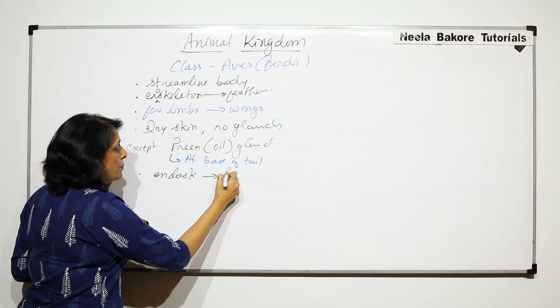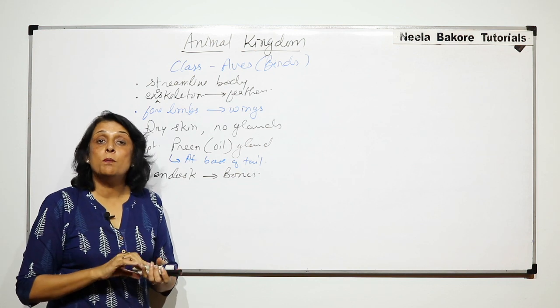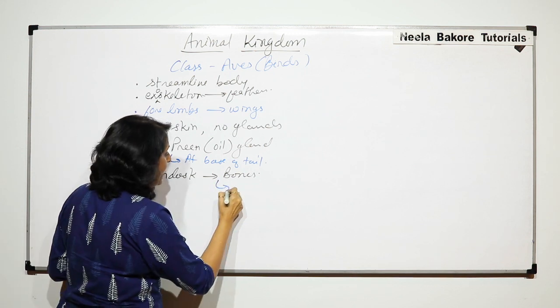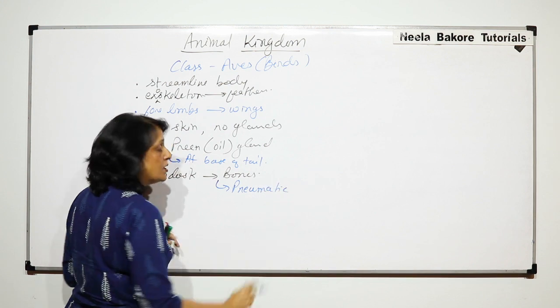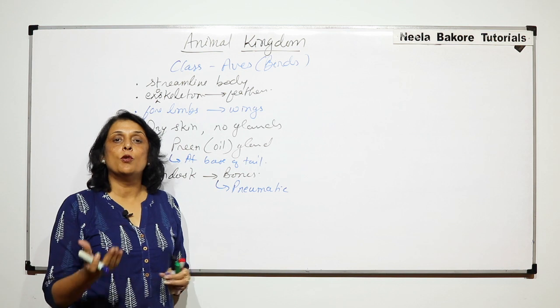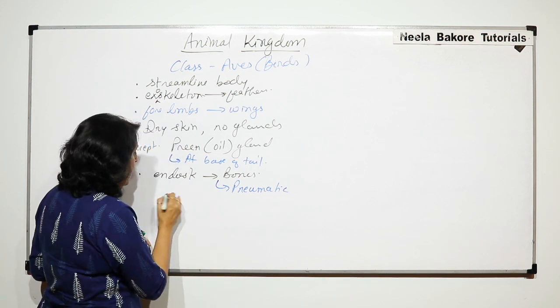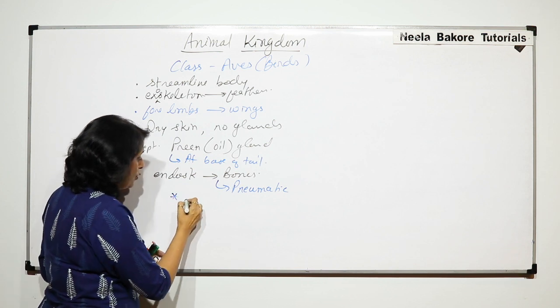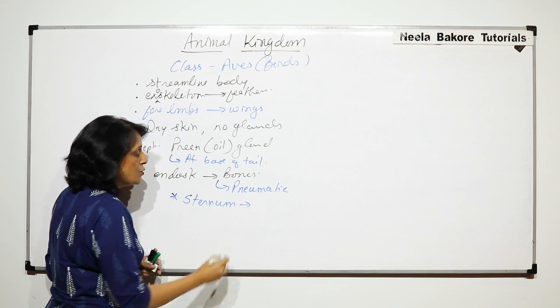Endoskeleton is made up of bones, so it is bony endoskeleton, but the bones are pneumatic. Pneumatic bones means the bones have air cavities, again an adaptation to make the bones very light so that it is easier for the birds to fly.